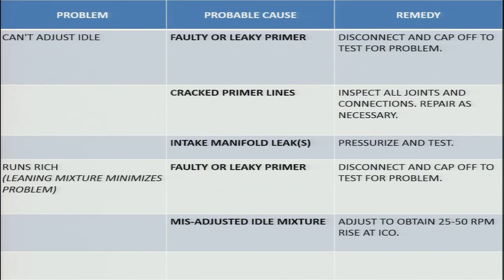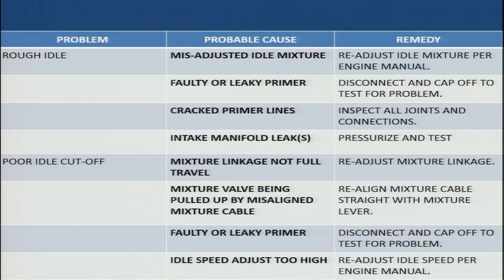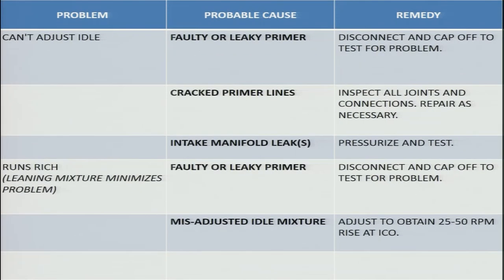Another problem: we are trying to adjust idle speed but are not able to bring it into the proper range. The reasons may again be a faulty or leaky primer, cracked primer lines, or leaks in the intake manifold. Leakage in the primer and intake manifold can be very dangerous and lead to various problems — rough idle, poor idle cutoff, and inability to adjust idle speed.